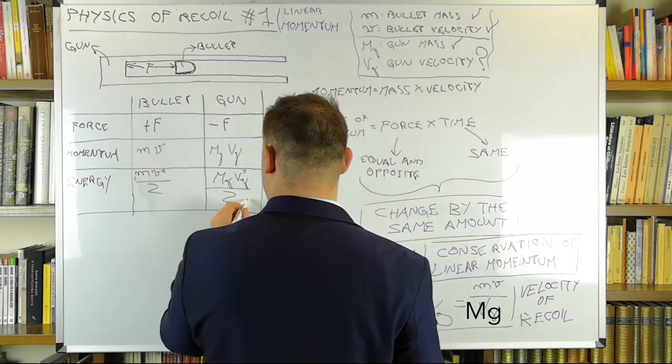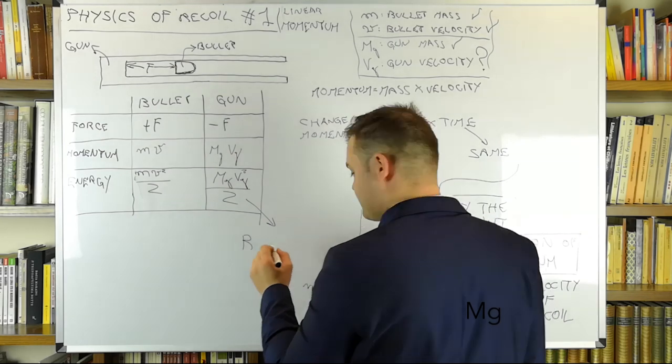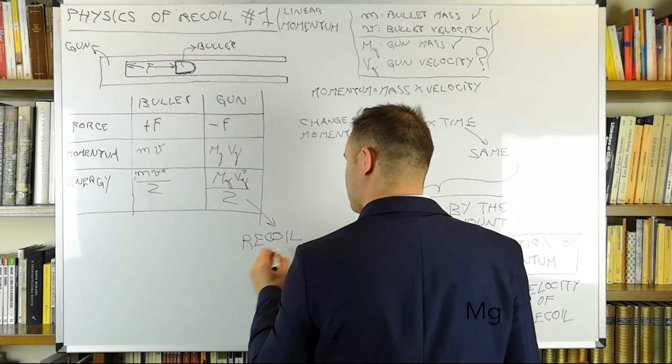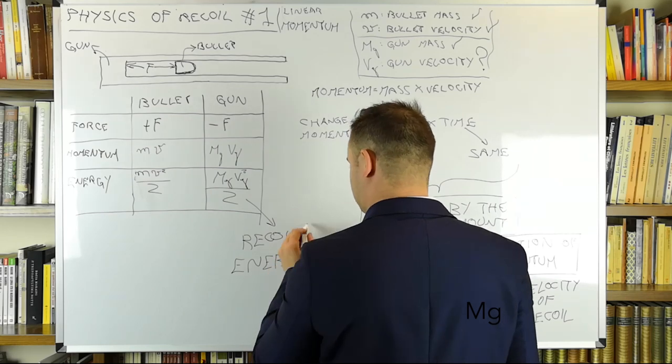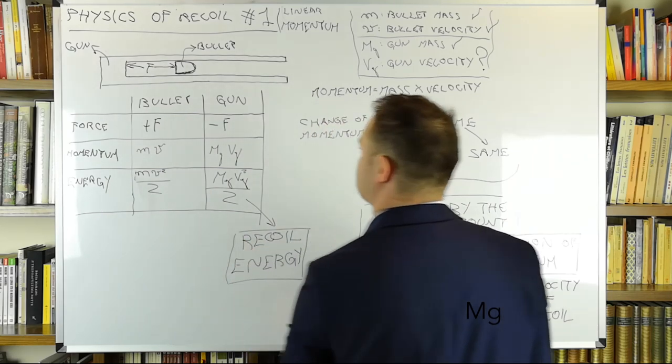The kinetic energy of the recoiling gun is what we want to calculate. It is the amount of energy we have to dissipate after each shot, and hence is our way of telling how painful the recoil is gonna be. We call it recoil energy.